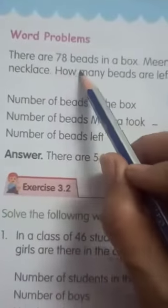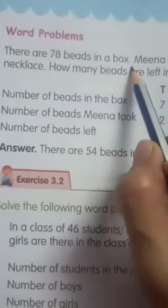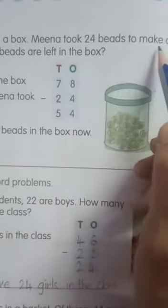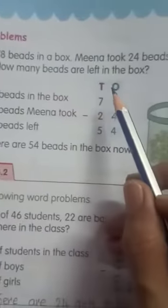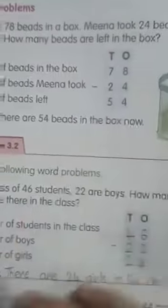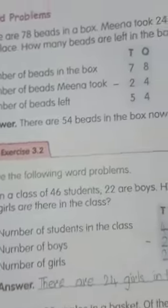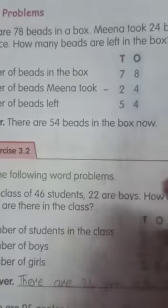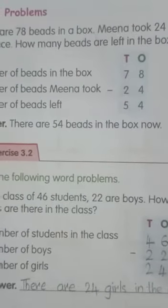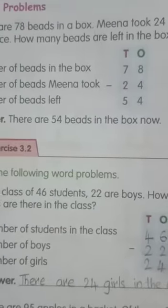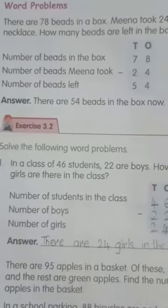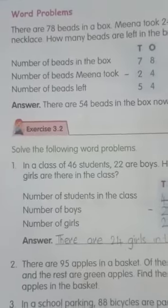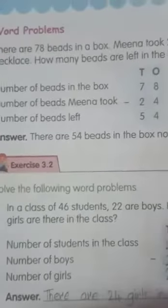There are 78 beads in a box. Mina took 24 beads to make a necklace. How many beads are left now? Children, if in the question it is given that how many are left, that means you have to do subtraction. If in the question it is there like how many are there in all, in that case you have to add the numbers.